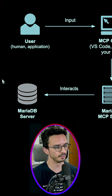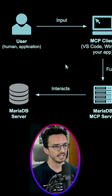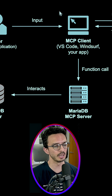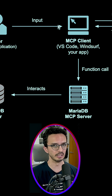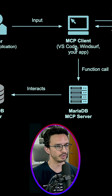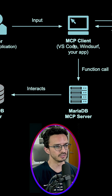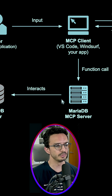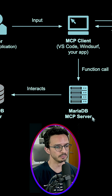Let's say you have a MariaDB server and then you have a client — an application that you are building, or it can be something that you are using as a developer, for example Visual Studio Code. This client understands the MCP protocol. And then you put something in the middle of these two, which is the MariaDB MCP server.